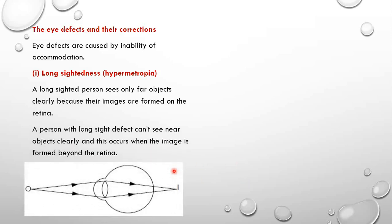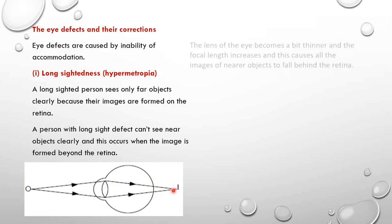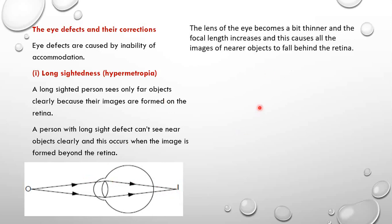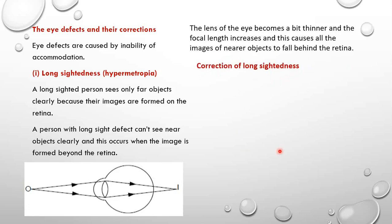If this is an object at a near point, this person will not be in a position to see clearly because the image is going to be forming behind the retina. In this case, the lens of the eye becomes a bit thinner and the focal length increases, causing images of near objects to fall behind the retina. This defect can be corrected using a suitable converging lens — what we call a converging meniscus.